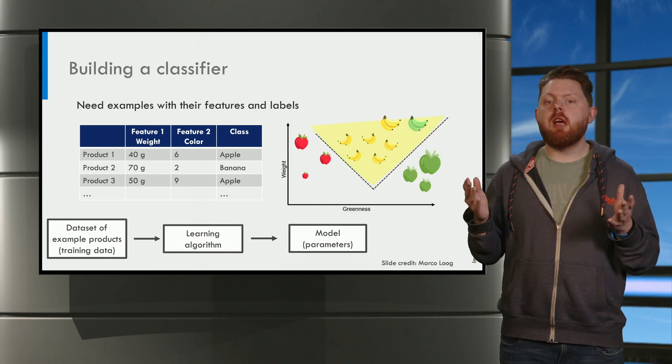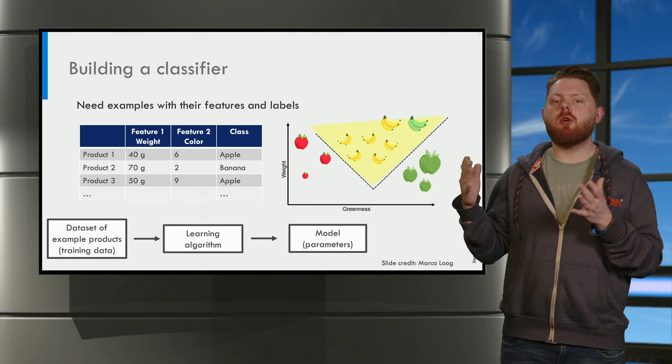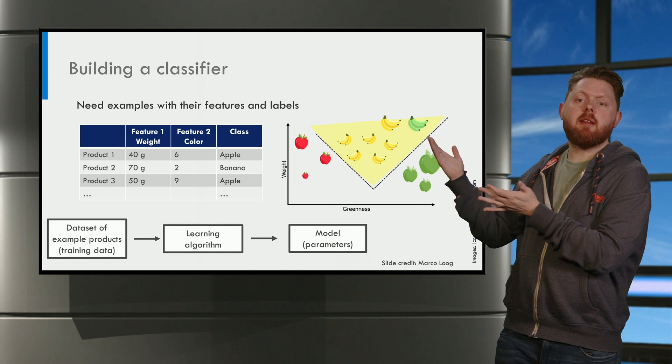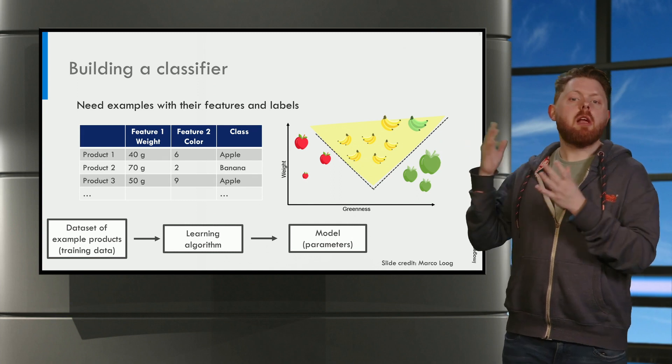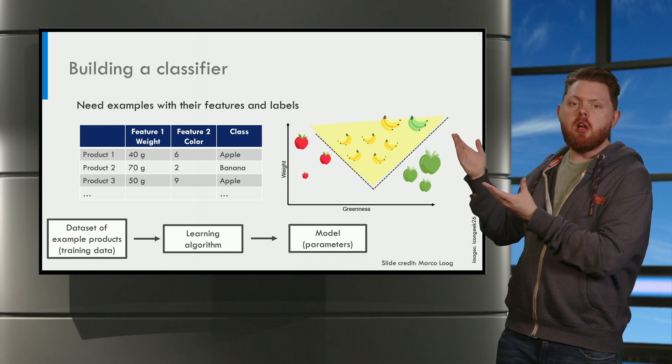For classification using two features, a so-called two-dimensional classification problem, we can easily plot our model and our data. Our classification model divides the space into different regions for each class.